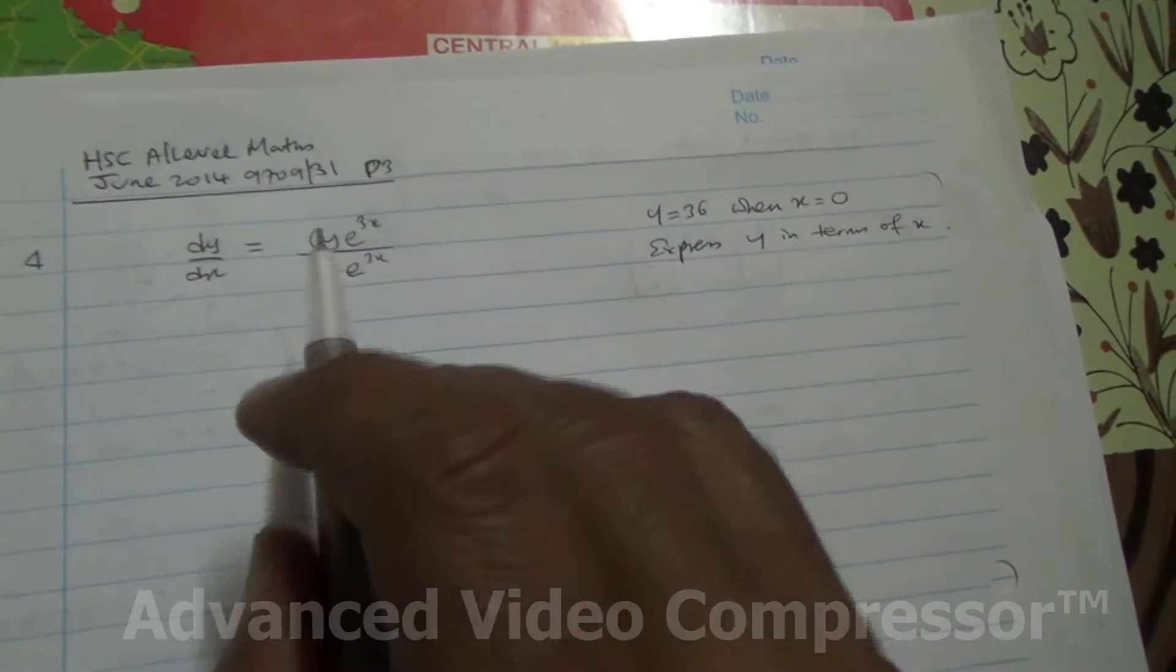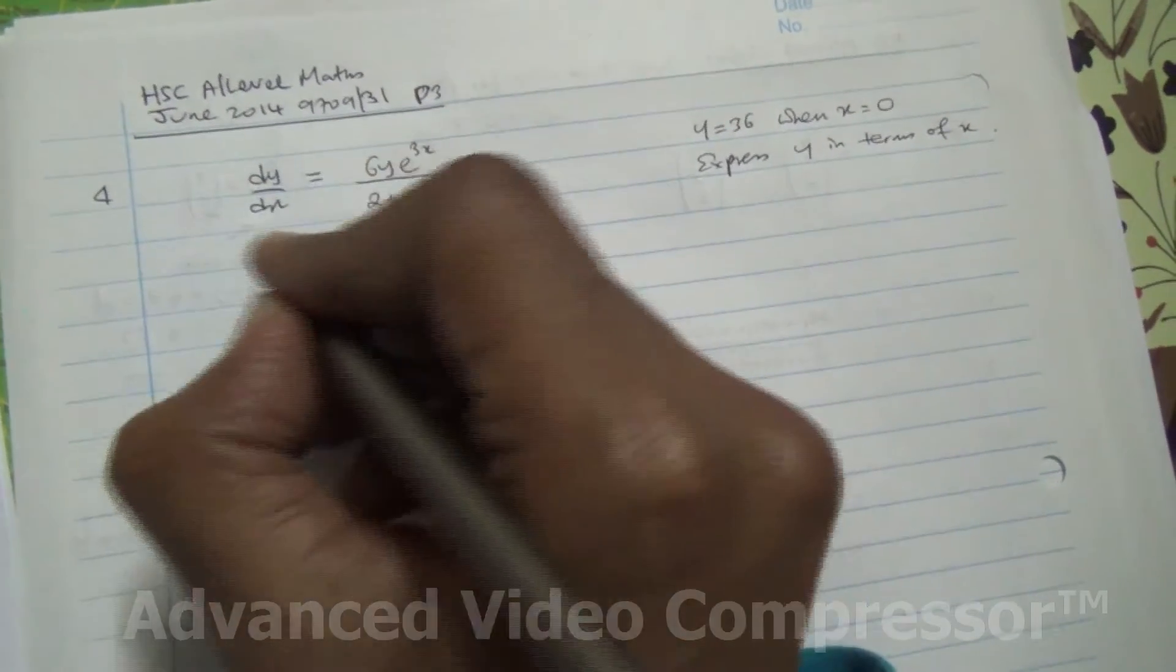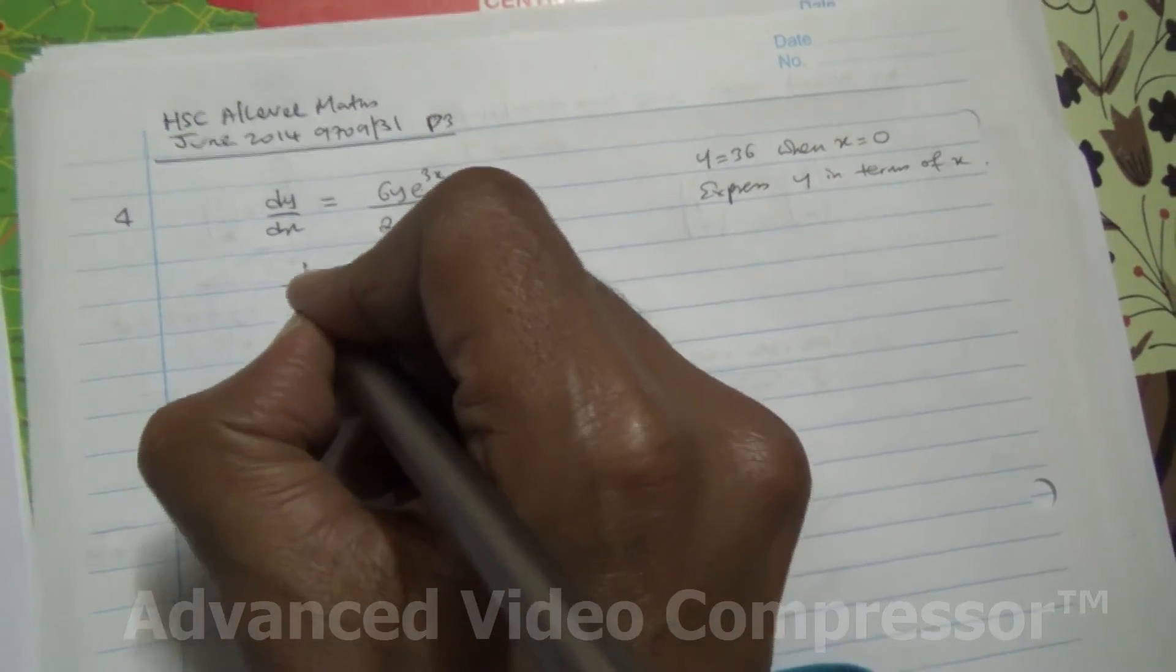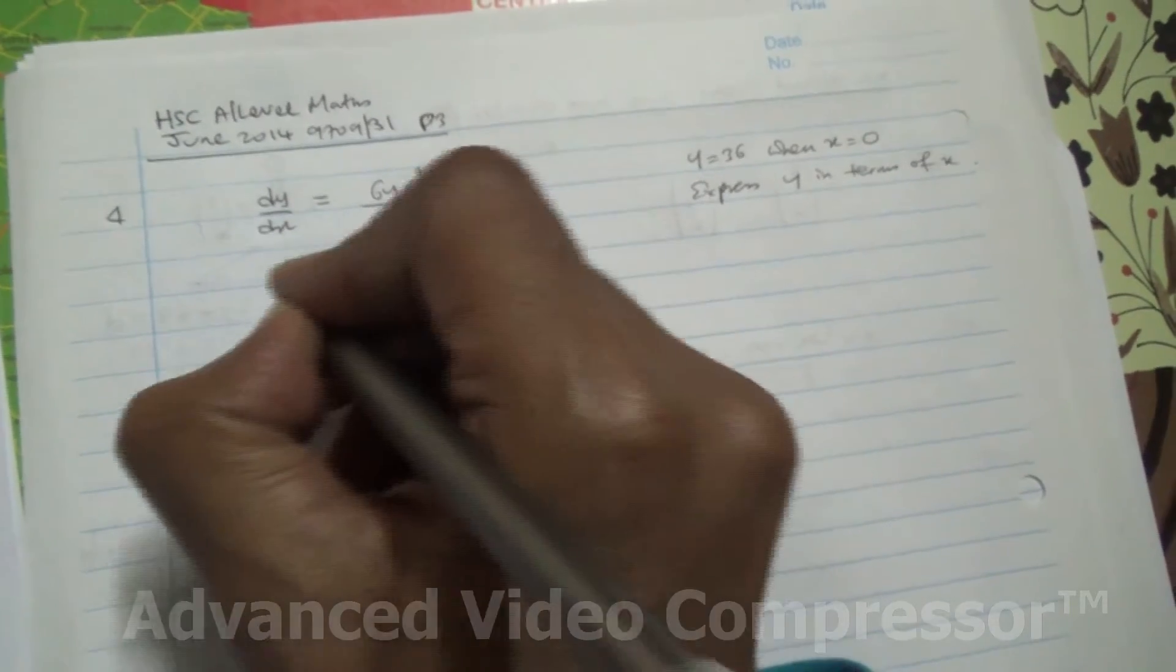So here's the question. To do a question like this, we're going to separate the variables. We've got 6y here and y, so I'm going to send 6y on this side. It's going to become 1 over y. And with respect to y,